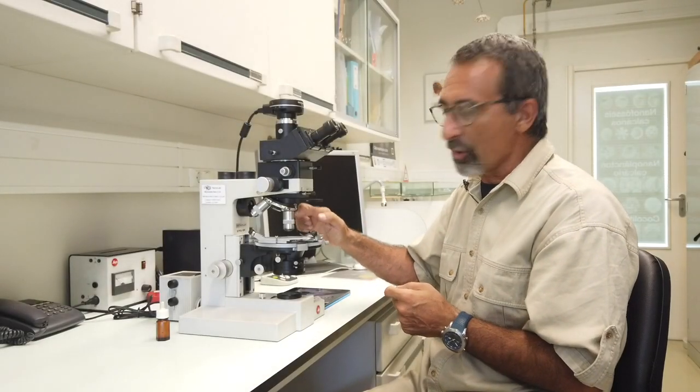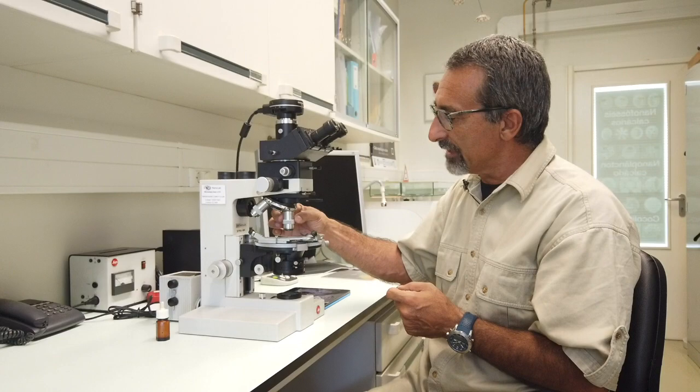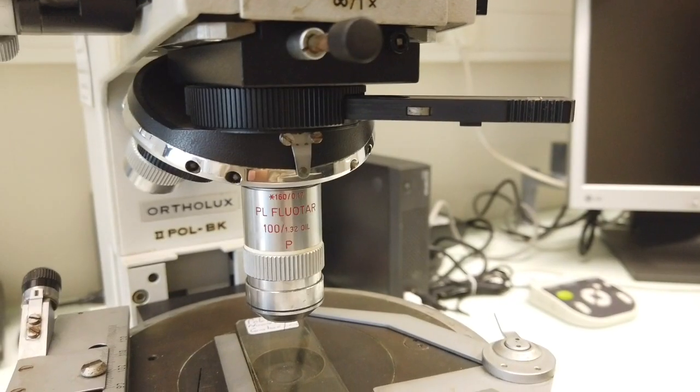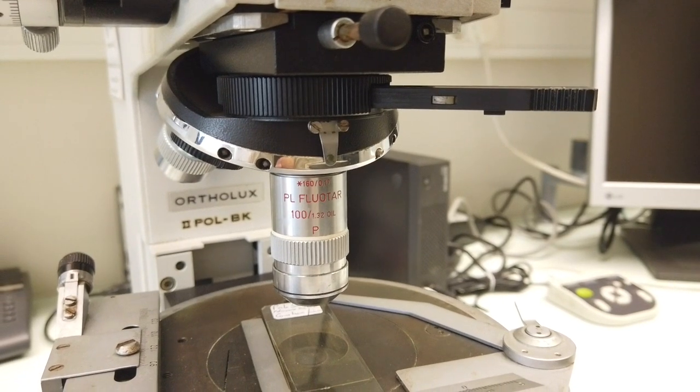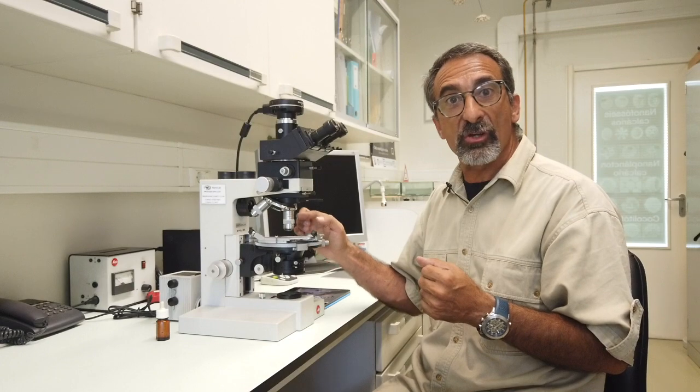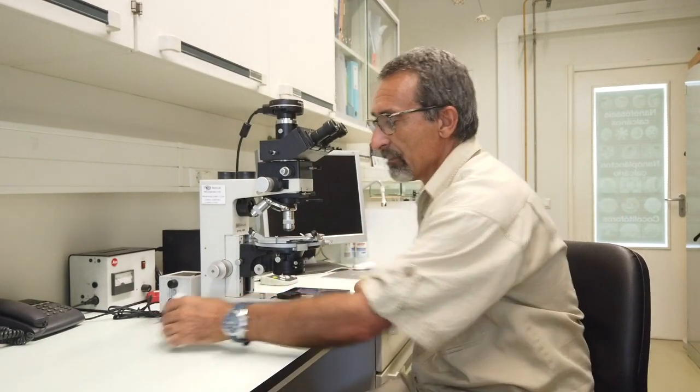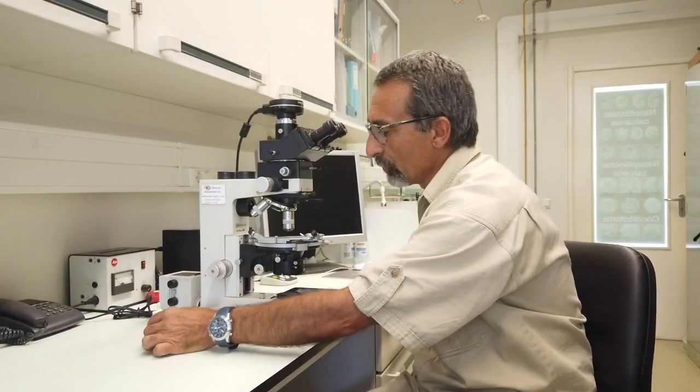Then we have an objective, an objective that magnifies 100 times. 100 times is what we normally use in our calcareous nanoplankton observations. We need a special objective that is adapted to use immersion oil and also adapted to polarize light.